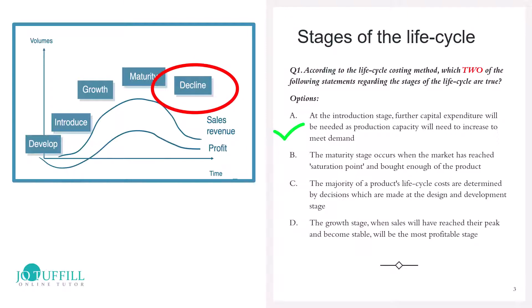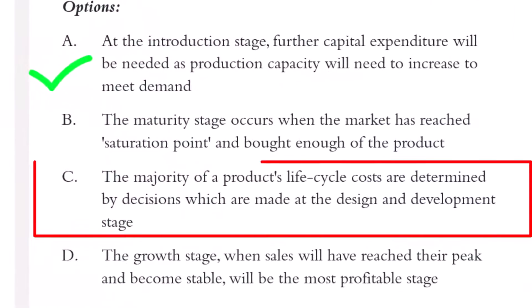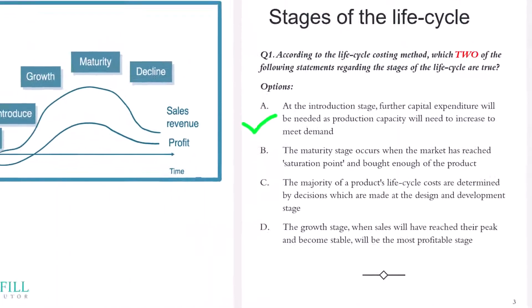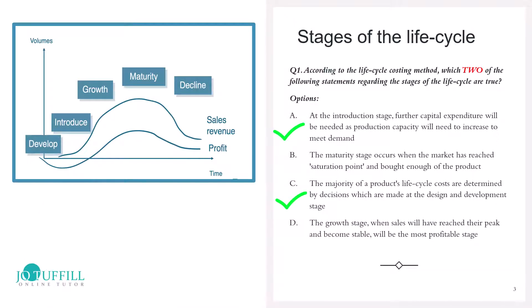Saturation point would be when we're going into decline. Option C: the majority of a product's life cycle costs are determined by decisions made at the design and development stage. This is absolutely true — all those decisions will determine most of the costs, including how it's manufactured, what functions are in it, whether it uses top quality or standard materials. Option D: the growth stage, when sales have reached a peak and become stable, will be the most profitable stage. No — the most profitable stage is maturity, where both sales revenue and profits are high. So our answers are A and C.